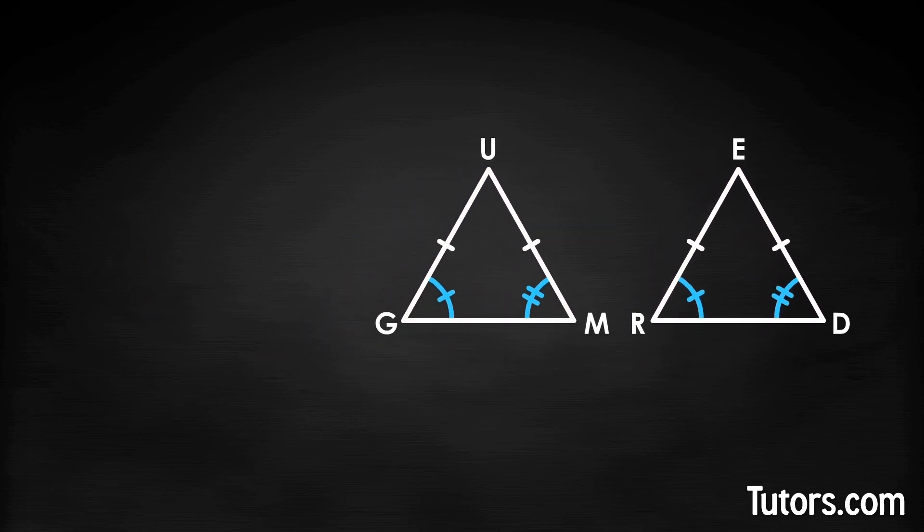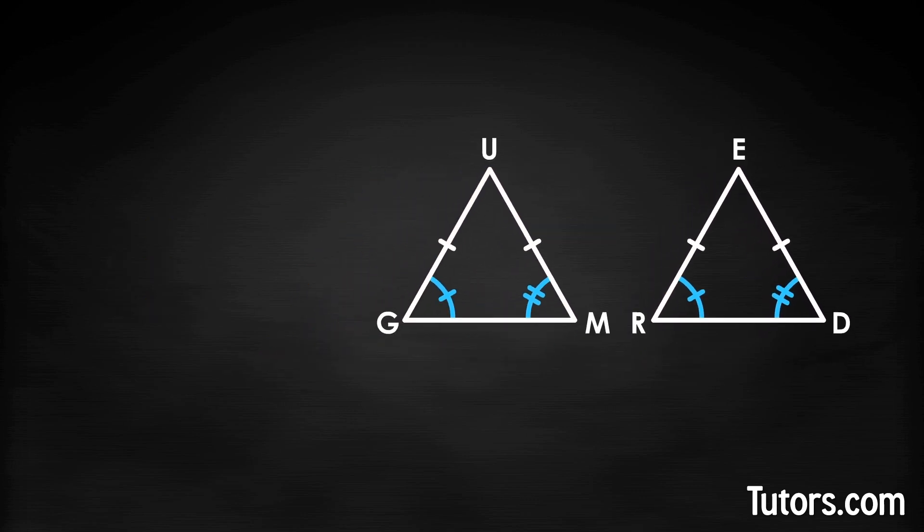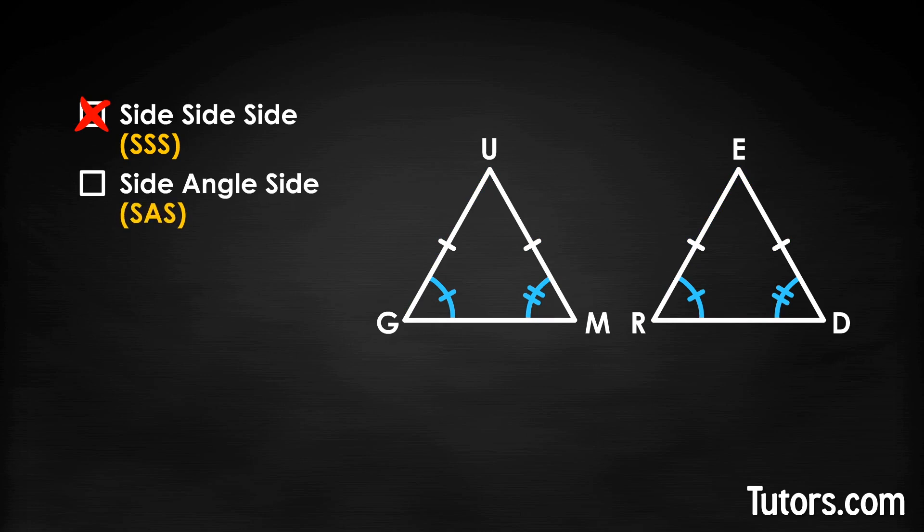Going through our toolbox full of triangle congruence testing methods, we can try each. Side-side-side, SSS. That won't work because we do not know about all three sides. Side-angle-side, SAS. That won't work either because we know two angles, not two sides.